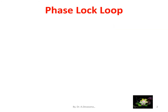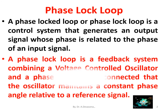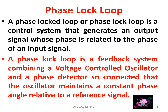Phase locked loop, PLL. A phase locked loop or phase lock loop is a control system that generates an output signal whose phase is related to the phase of an input signal. A phase lock loop is a feedback system combining a voltage controlled oscillator and a phase detector so connected that the oscillator maintains a constant phase angle relative to a reference signal.